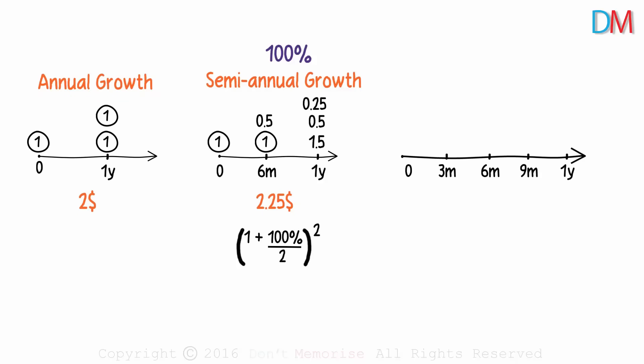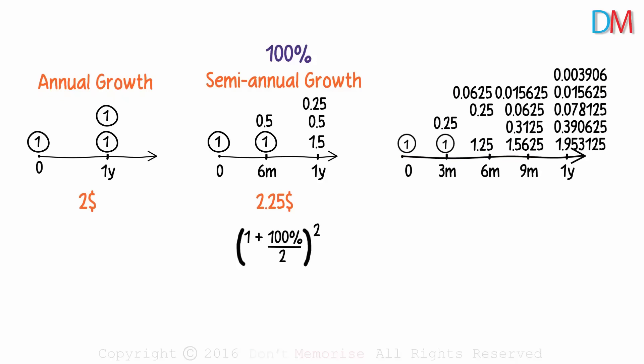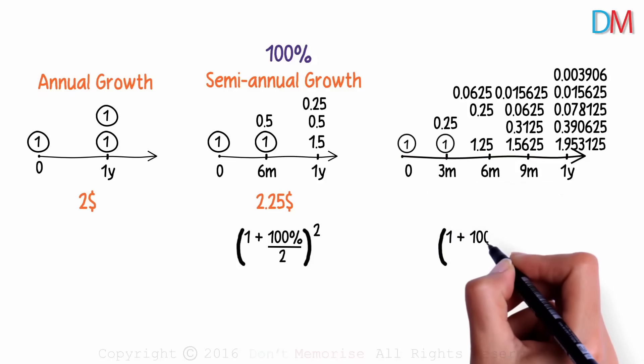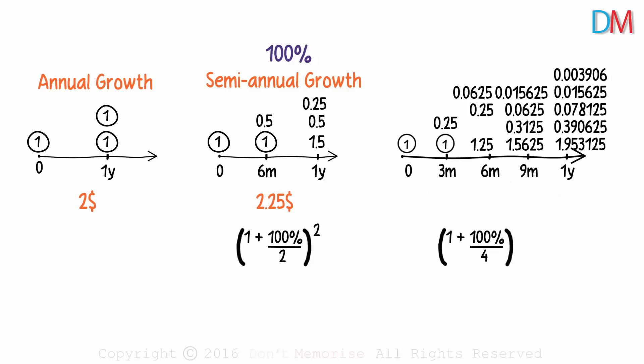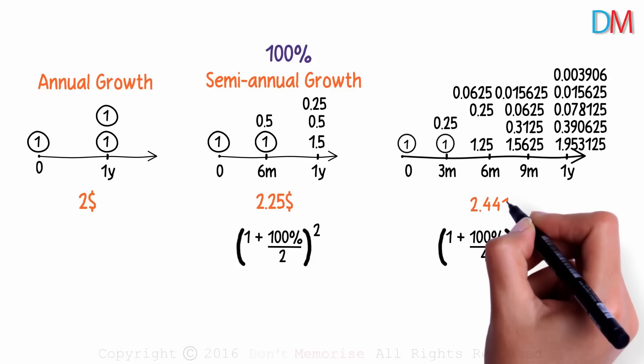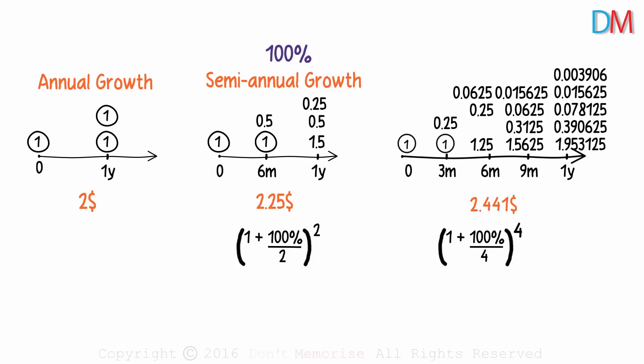What if we had four equal time periods in a year? We have divided one year into four quarters. This is how it would look. Looks messy, but it's actually very simple if you've understood the concept. It's twenty-five percent growth every quarter. The formula would change to (1 + 100%/4)^4. We would approximately get two point four four one dollars at the end of the first year. I suggest you pause the video and understand the quarterly growth diagram really well.